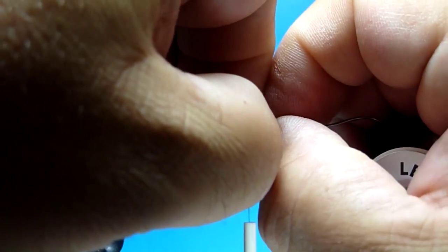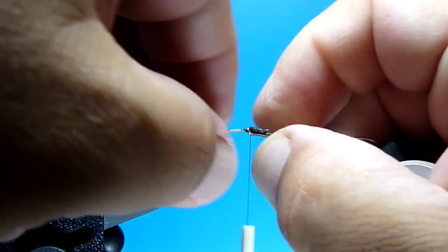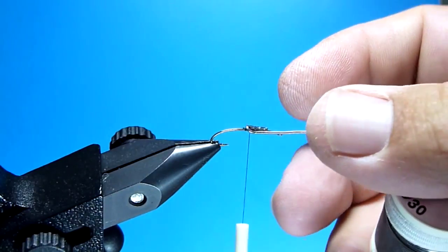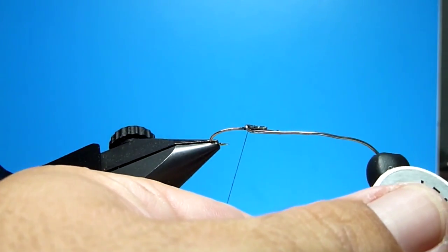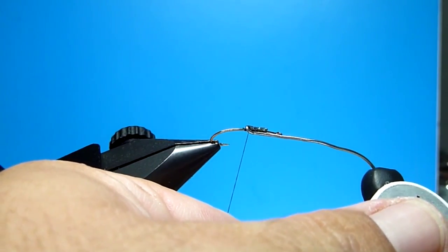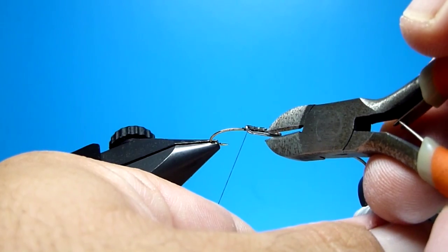So you just secure one side down, fold it over, get it squeezed down so it rides on both sides of the shank and clip it to length here, and then just secure it down fully.